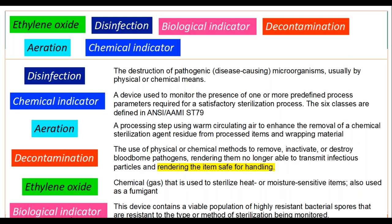Try to remember: parameters for your chemical indicators, and viable populations for your biological indicators. What is the name of one of the most common bacteria used for these biological indicators?